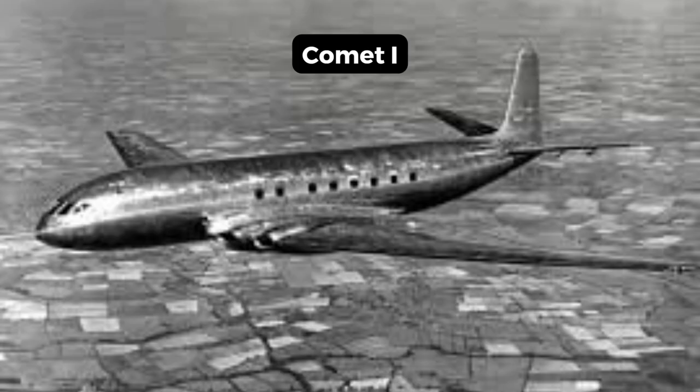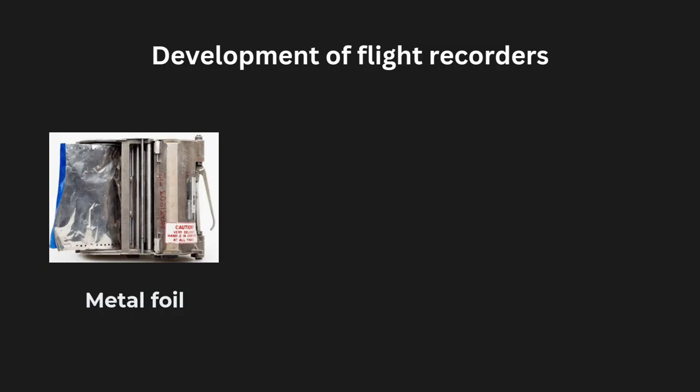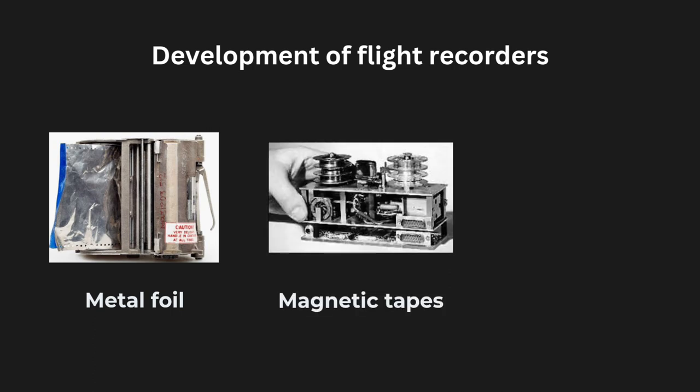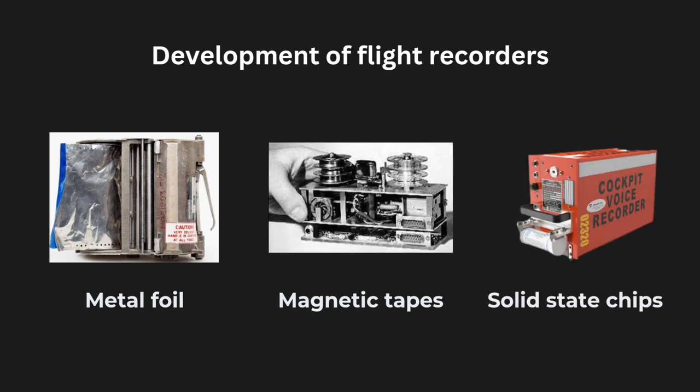Back in the 1950s, when the first commercial jets had five accidents, investigators realized how useful it would be to have a record of what was happening on the plane. Early generations used flight recorders which etched data on metal foil, and by the 1970s they switched to magnetic tape recorders, and by the 90s to solid state memory chips. But the overall concept has remained the same.